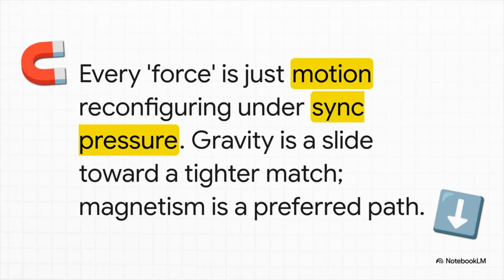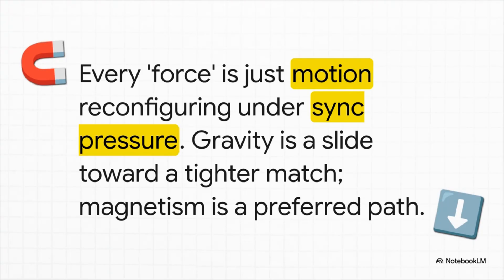So what about forces, like gravity and magnetism? This theory throws out the idea of mysterious fields and replaces it with something called 'sync pressure.' Imagine you have two spinning tops on a table. As they wobble, they'll kind of nudge each other until they find a more stable, shared rhythm. That's it. That's every force. Gravity is just that happening on a massive scale—big objects are just sliding towards a more stable, synchronized state. Magnetism? That's just a preferred direction for that synchronization. Every single force is just motion trying to find the path of least resistance.